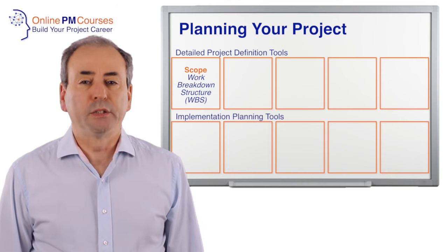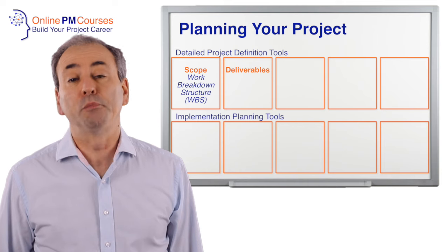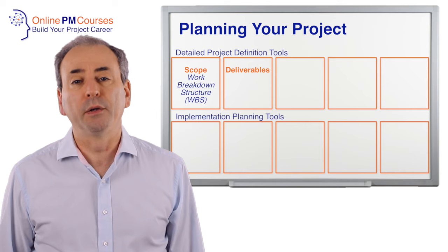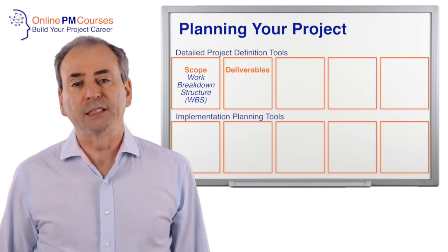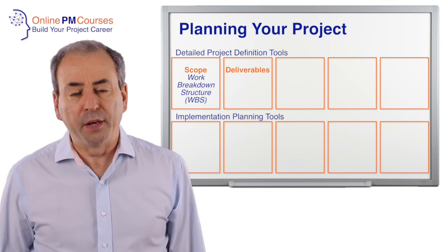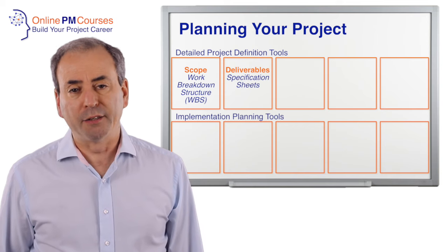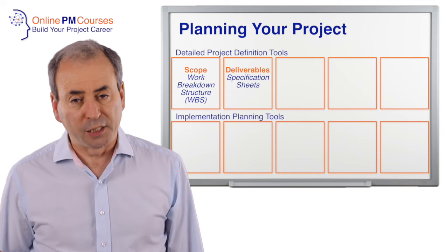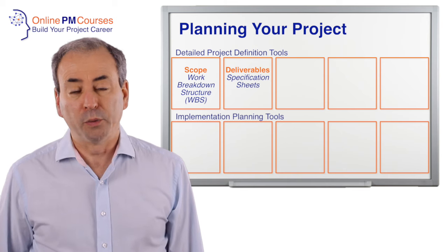The second element of our project plan has to address the deliverables or products that we're going to produce as a result of our project. Two things make up this component: first, a schedule of all of those deliverables, often reconciled to your work breakdown structure; and second, a series of specification sheets. For each deliverable there needs to be a specification documenting the functionality, the quality standards, and the regulated requirements to which it needs to conform.